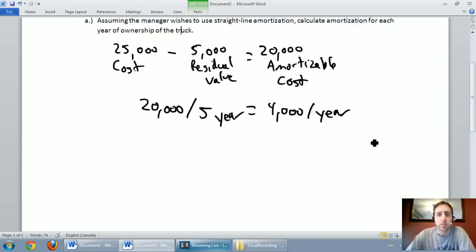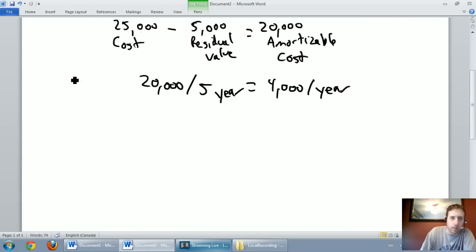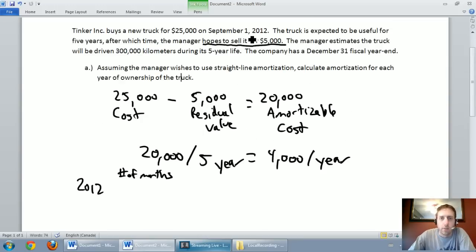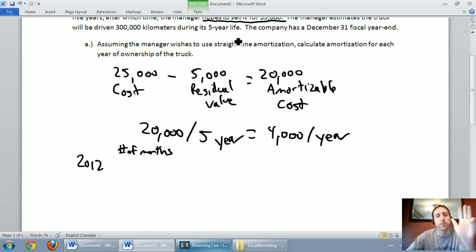We know we want to amortize this at a rate of $4,000 per year. Now let's look at our years. In 2012 I want to calculate the number of months we're going to own the thing. We'll start in September, so September, October, November, December - we're going to own it for four months of 2012.